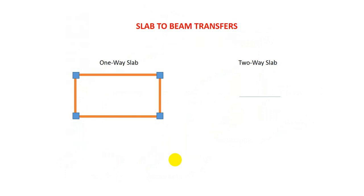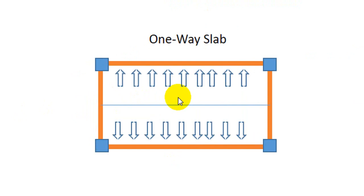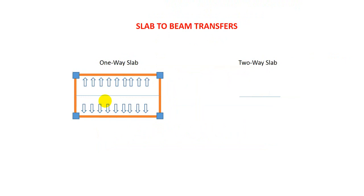Now suppose this is a one-way slab. For a one-way slab, the load transfers in one direction. If we divide our slab with one line, the load will mainly transfer to the two beams along the longer side — that is, in the shorter direction. This is how load transfers from a one-way slab to its beams.